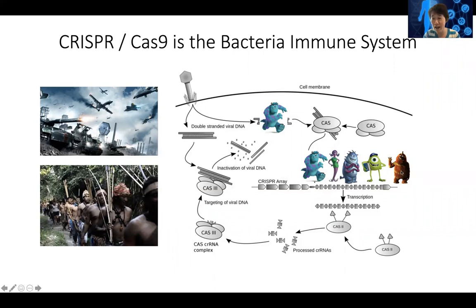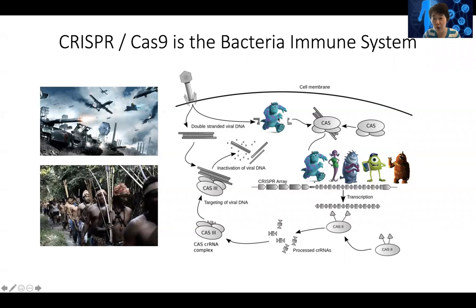This CRISPR array is kind of the file system for the bacteria to remember all the bad invaders before. When this bacteria was young, it had seen an alien and that DNA sequence was inserted. Next time a new virus invaded and the bacteria survived, it would insert a unique sequence in front of the previous one. The repeats are just spacers between the different signatures. Interestingly, the newest infection's virus sequence is always added to the very front, because this region can be transcribed into RNA, and more copies are made from the beginning than the end.